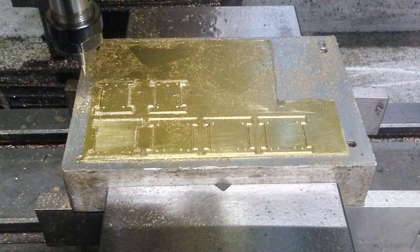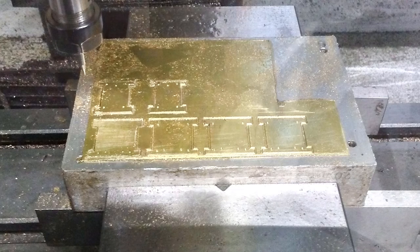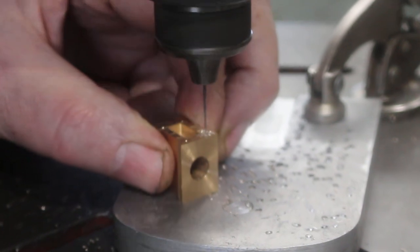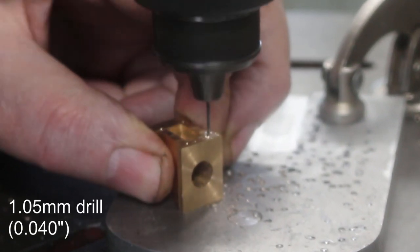I'm using a 0.3mm engraving cutter. The brass sheet is 0.5mm thick. Drilling the axle boxes for 12 BA threaded holes.